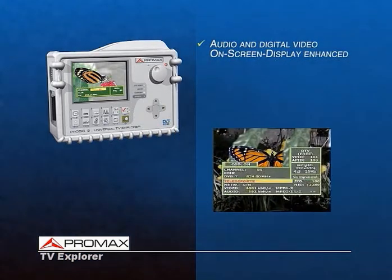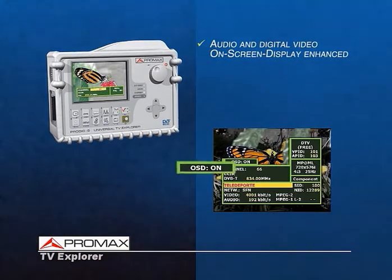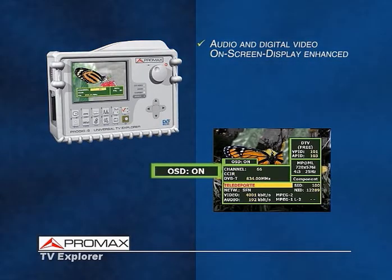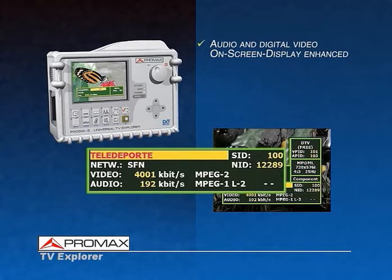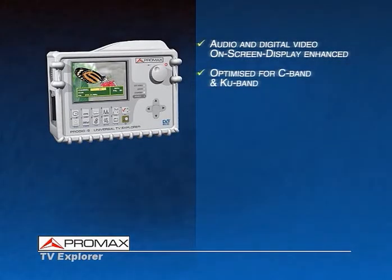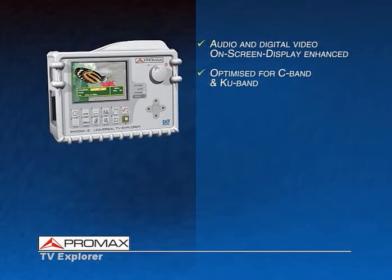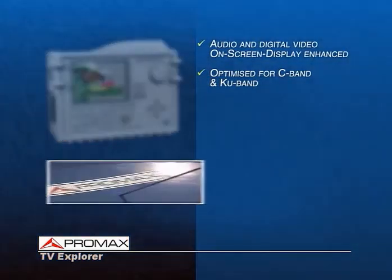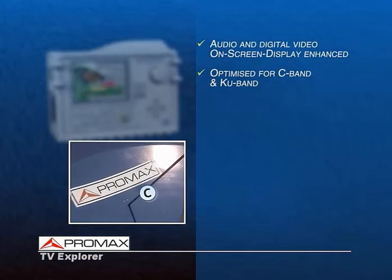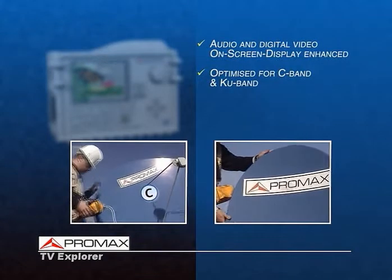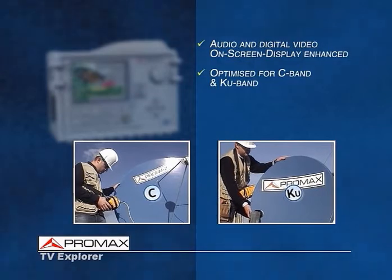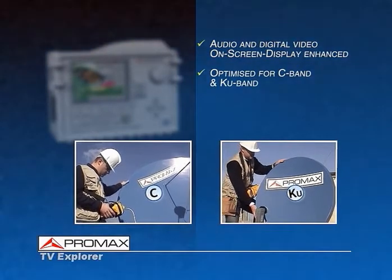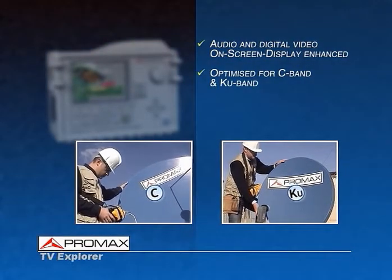If the user requires it, digital TV information can remain on screen, as well as the calculated bitrate for the audio signals. The new firmware releases improve the satellite signal analysis, as it is now possible to completely analyze the C and KU bands. The Explorer will calculate, in each case, the most suitable deviation frequency.